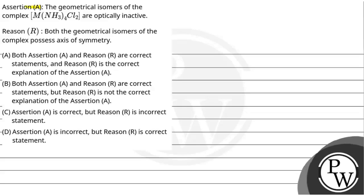Let's read the question. The question says, Assertion: the geometrical isomers of the complex MNH3H4Cl2 are optically inactive. Reason R: Both the geometrical isomers of the complex possess axis of symmetry.